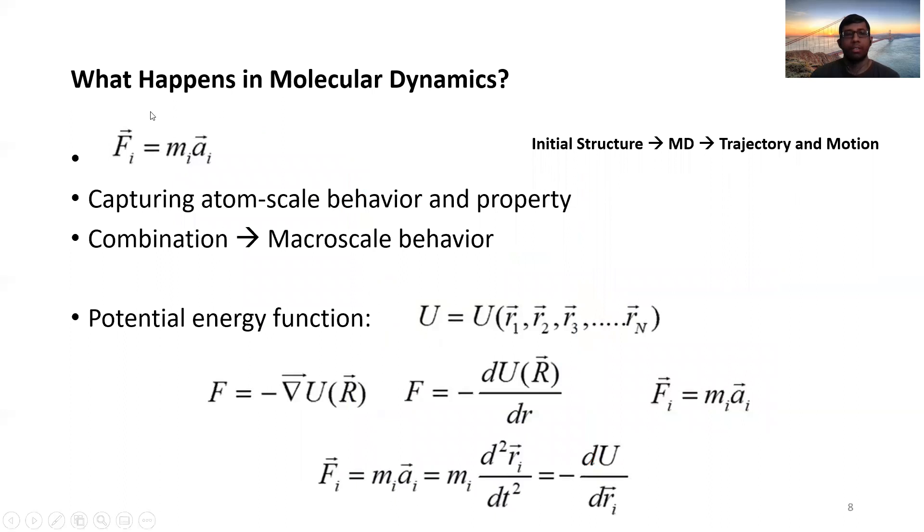So as you can see that F equals ma is the governing equation in molecular dynamics, that is going on under the hood. You have an initial structure. You are applying a bunch of molecular dynamics theoretical conditions on the system. And you get the trajectory and motion of the atoms in the system.